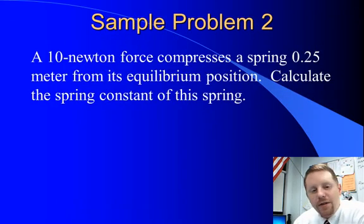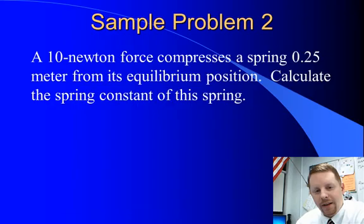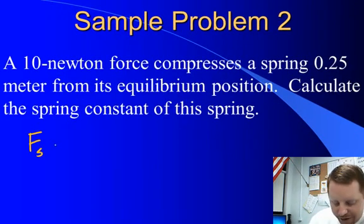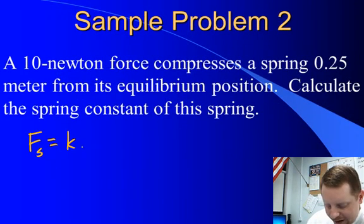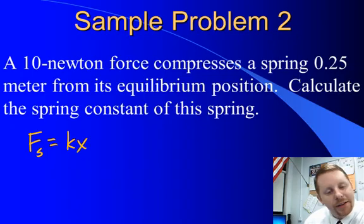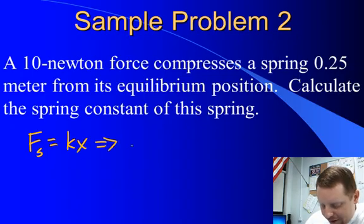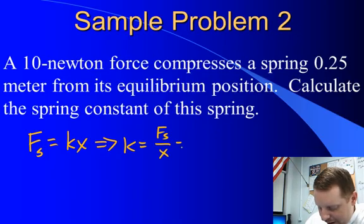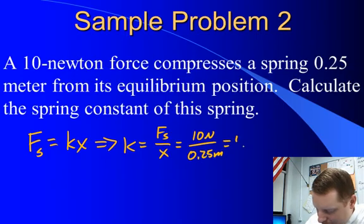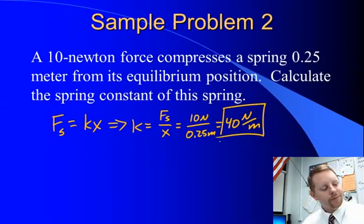Another sample problem: if we have a 10 newton force that compresses a spring one-quarter meter from its equilibrium position, calculate the spring constant. Using Hooke's Law and looking at the magnitude, the force of the spring equals k times displacement. Therefore k equals the force divided by displacement — 10 newtons over 0.25 meters — for a total of 40 newtons per meter. So we can calculate the spring constant either graphically or analytically.